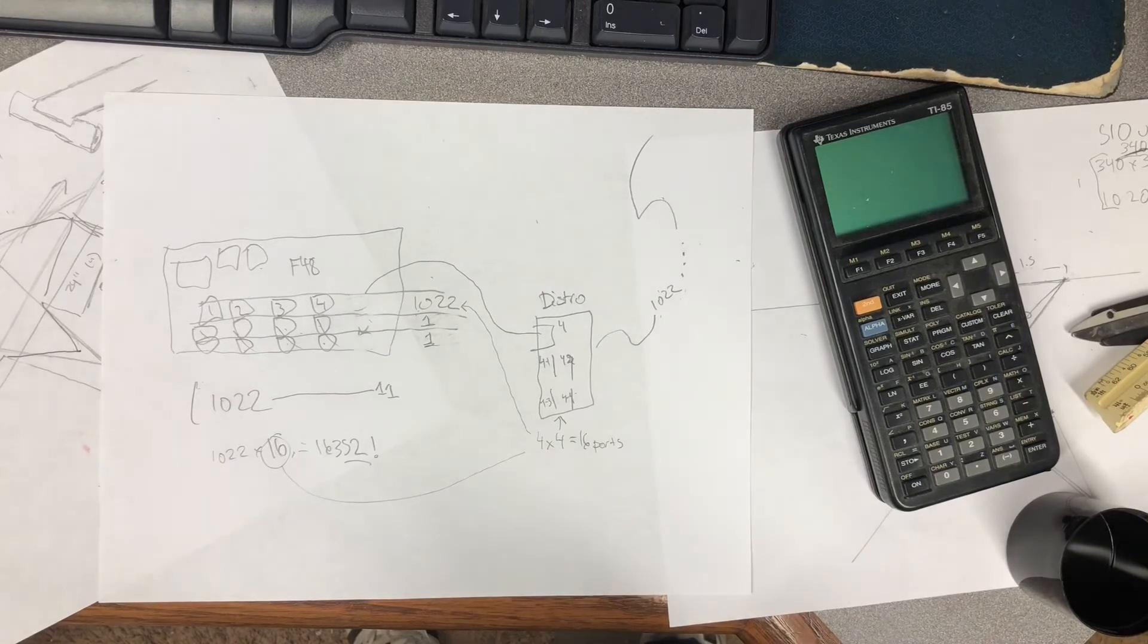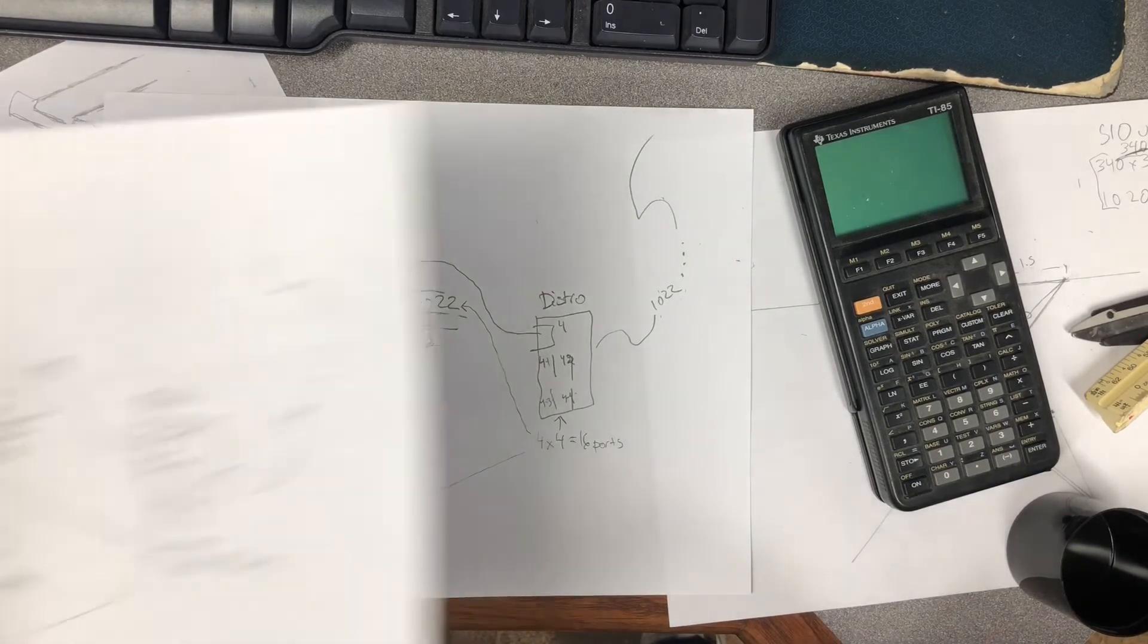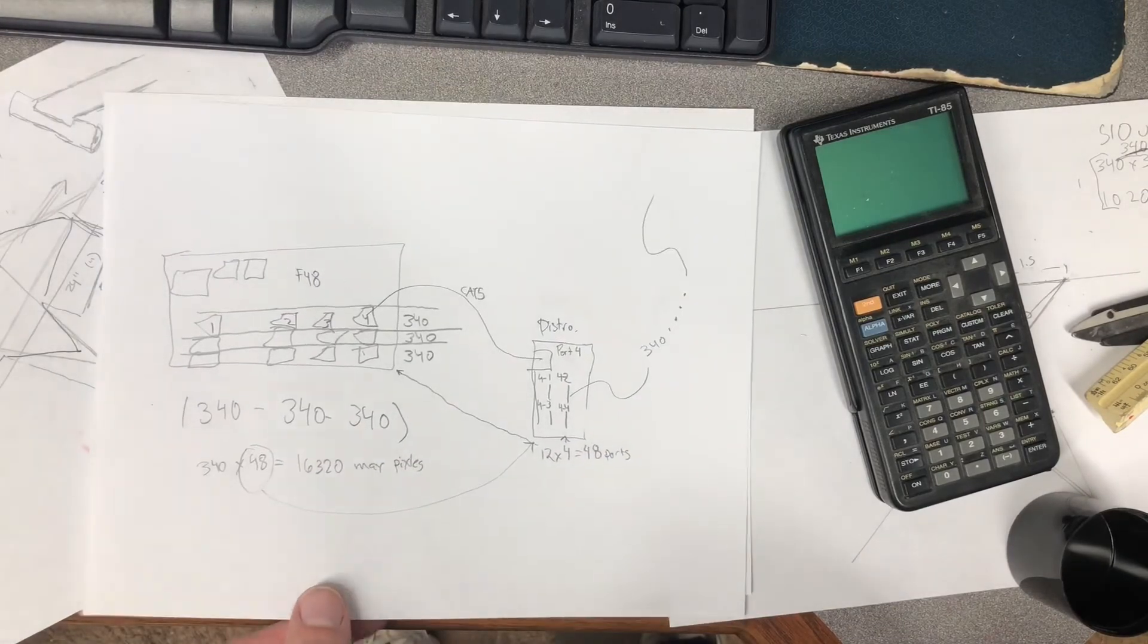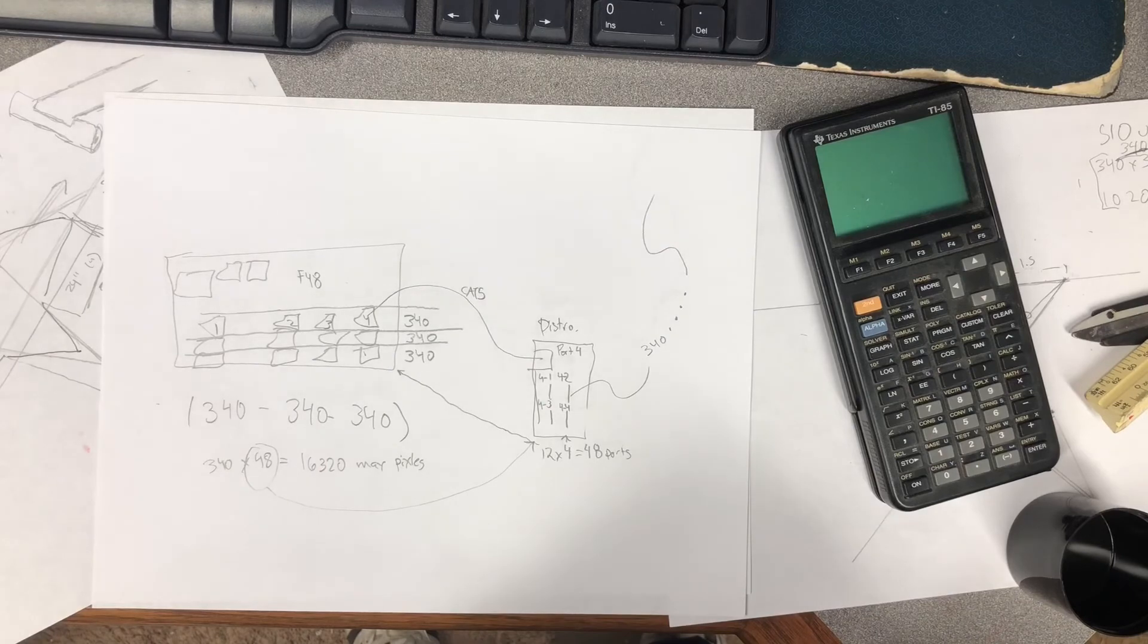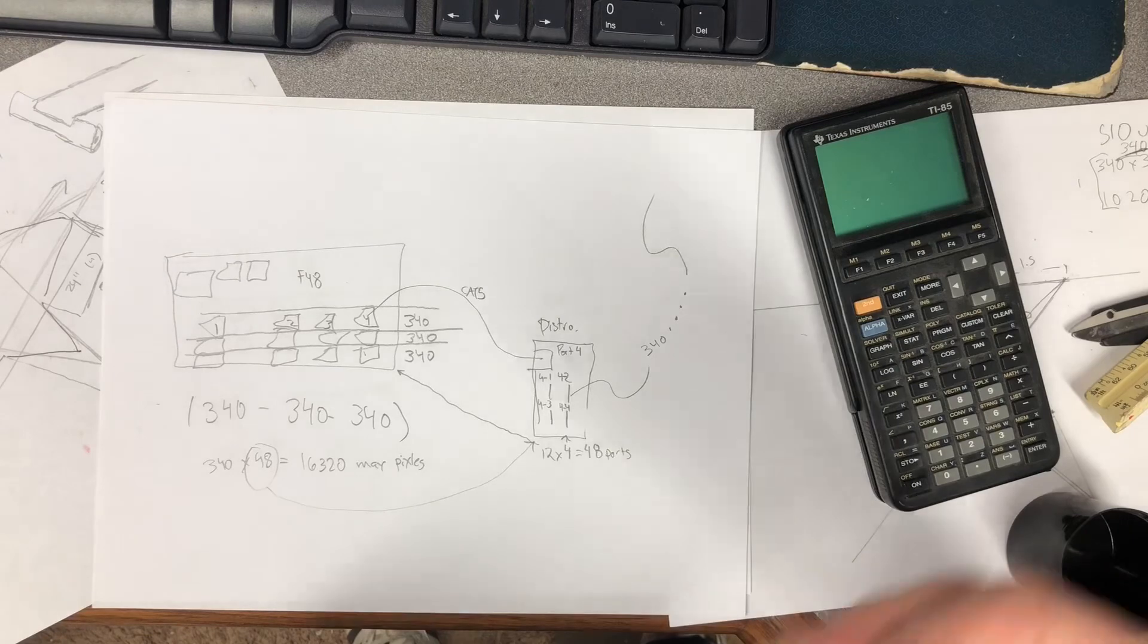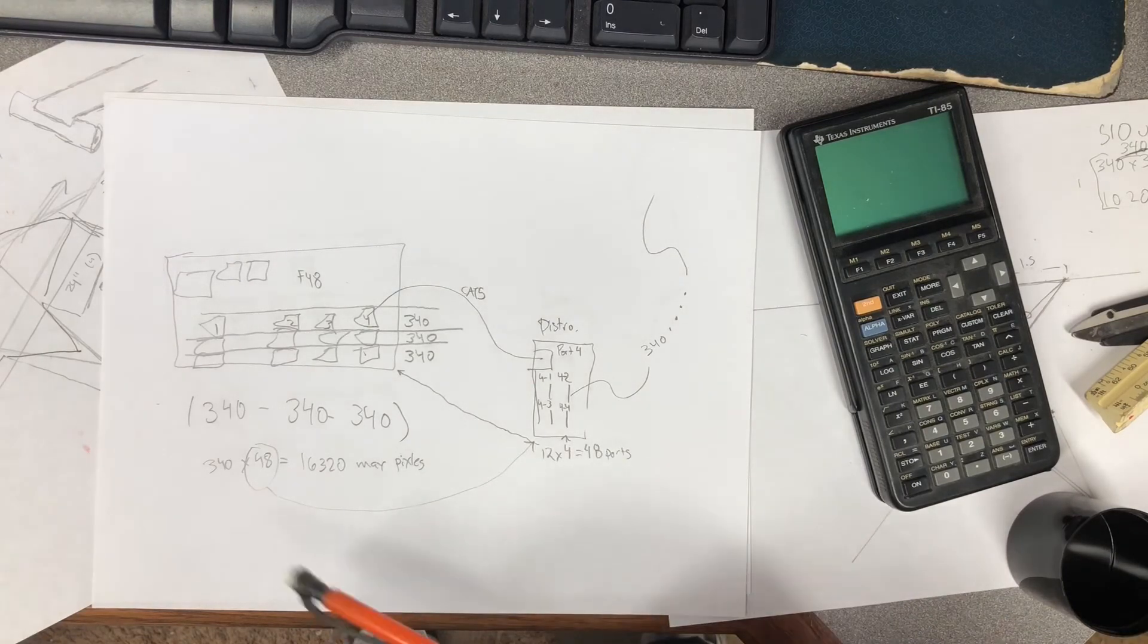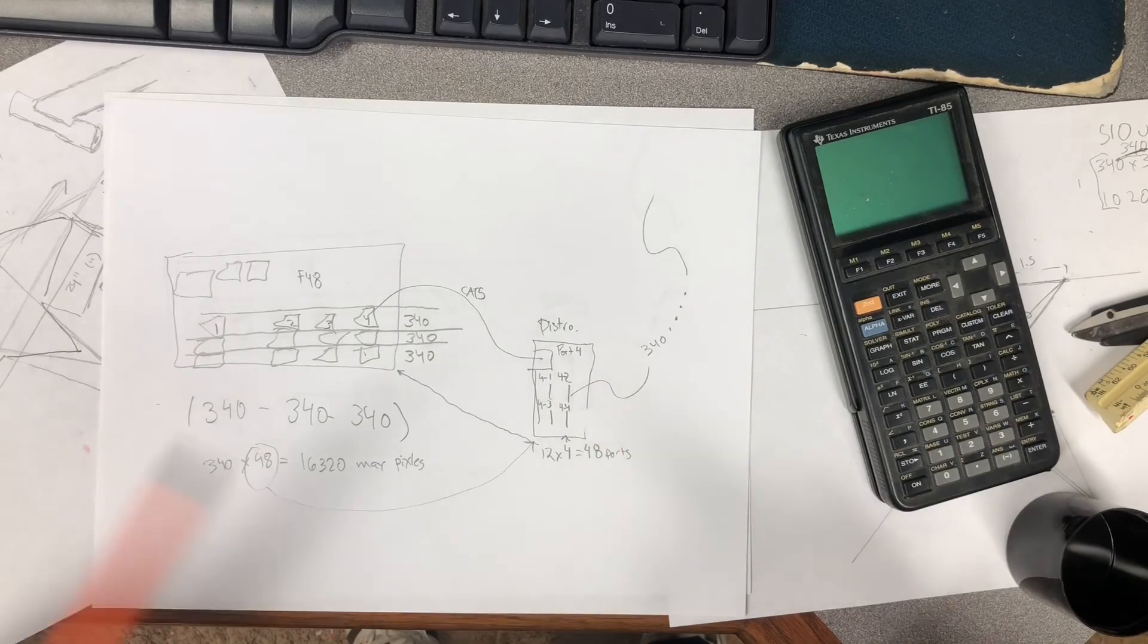You would then take the universes, divide them up so you have enough channels to provide information to the nodes themselves. That stuff should all be self-explanatory, or basically beyond the scope of what I'm going for here. This is primarily around the F48, explaining this slider, explaining the max pixels, explaining how the distribution ports work to try to hopefully help some of you out.